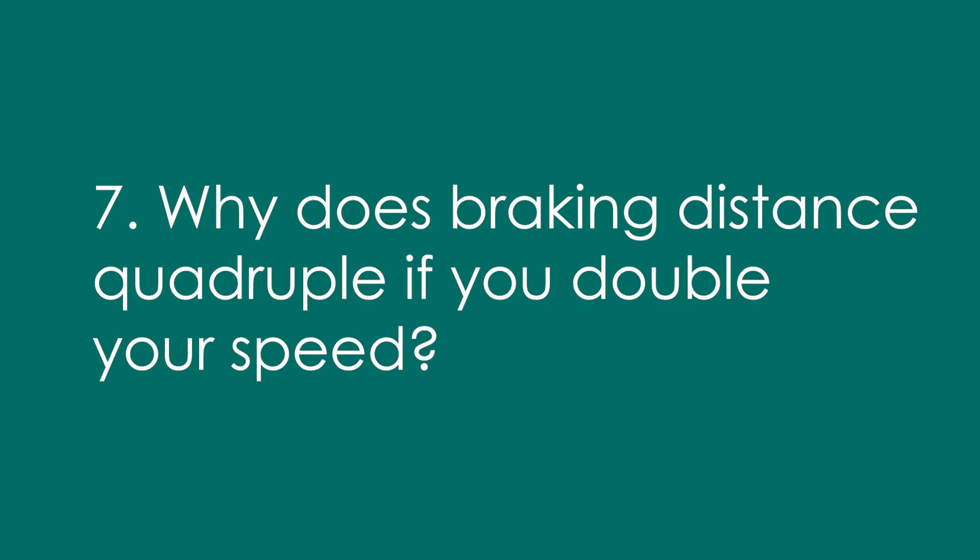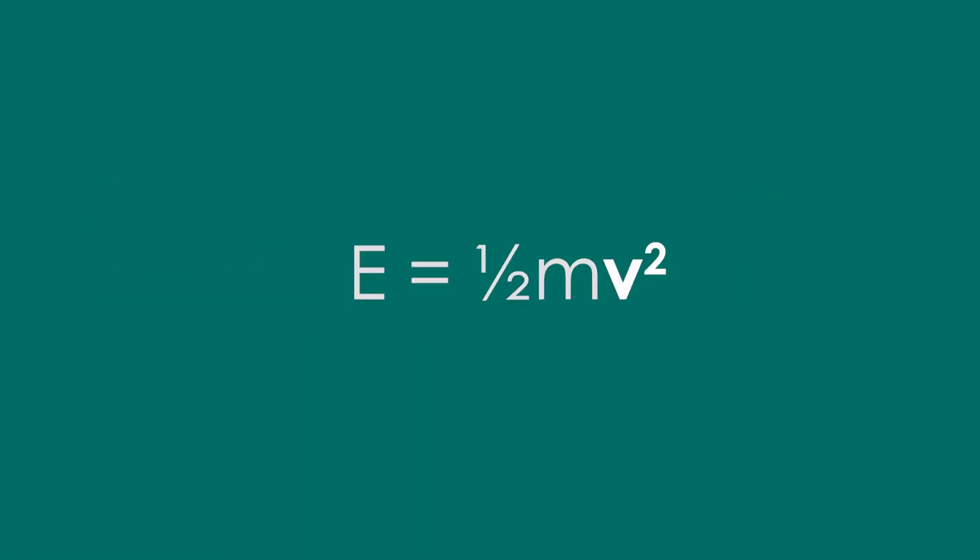7. Why does braking distance quadruple if you double your speed? It's because of the V squared in the kinetic energy equation. If you're doubling V, you're doubling it twice, so quadruples.